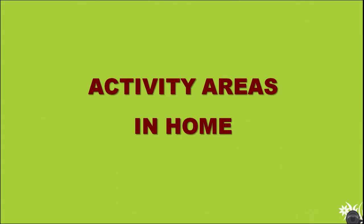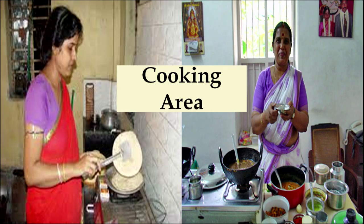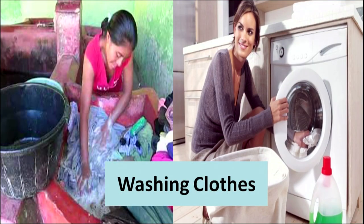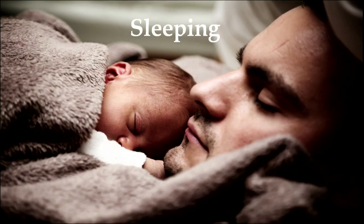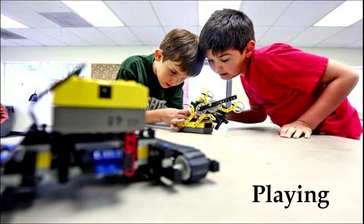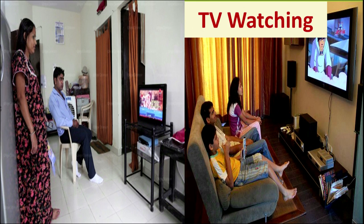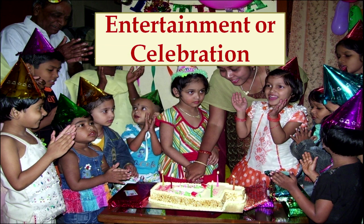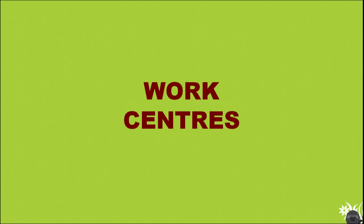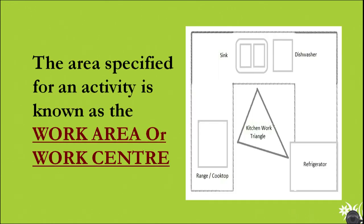Now we will talk about different activity areas in the home. These include the cooking area, washing area where you wash clothes, sleeping area where you comfortably sleep, playing area which can be accommodated with other rooms, study area, and an entertainment area where you watch TV and gather family members for any kind of celebration. The area specified for an activity is known as a work center or work area.